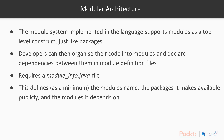So what is a modular architecture? The module system implemented in the language supports modules as a top-level construct, just like Java supports packages as a top-level construct. Developers can organize their code into modules and declare the dependencies between them in a module definition file, just like a manifest file for Maven. This requires a module-info.java file, which defines at a bare minimum the module's name, the packages it makes available publicly, and the modules it depends on. Much like a POM file defines dependencies for an entire project, we're defining dependencies for a single module — this new unit of organization — and packaging it up with the code.